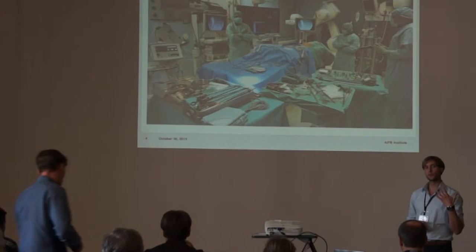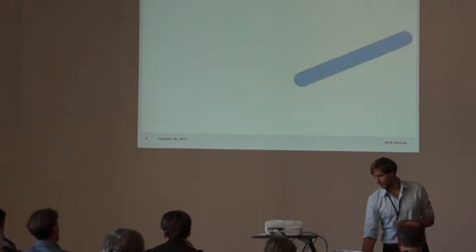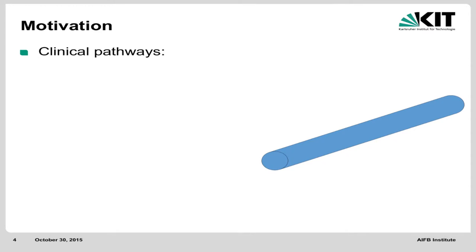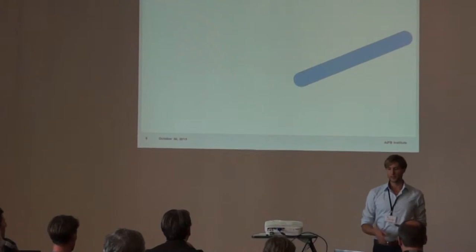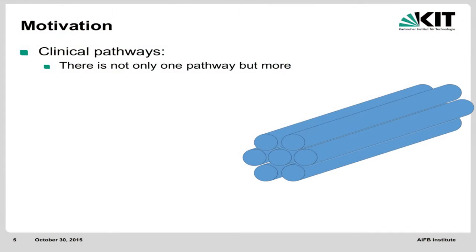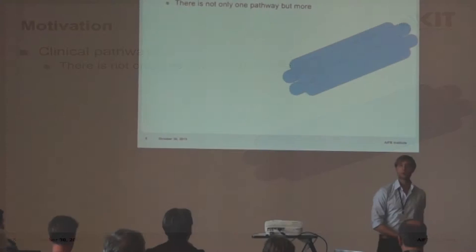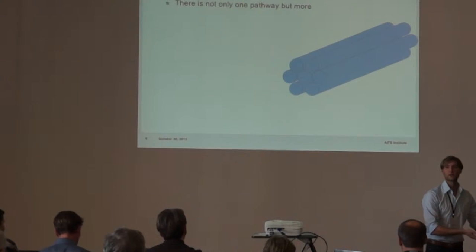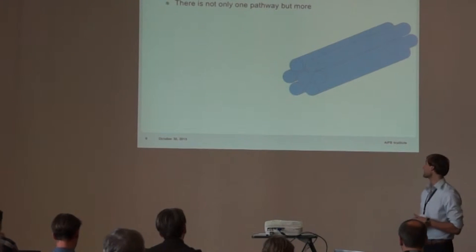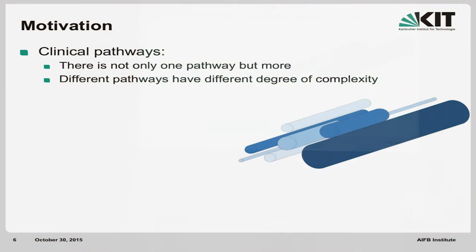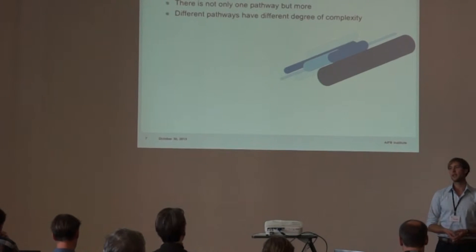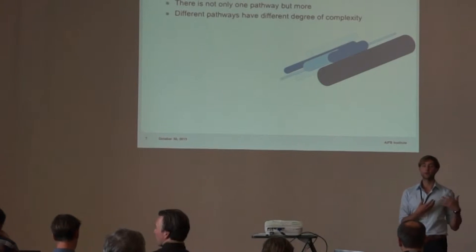However, the process becomes more complex although it helps them. Each bar represents one process, one clinical path. There is not only one clinical path — there are multiple clinical paths. We have one pathway for a patient who broke a leg, and one pathway for a patient who suffers from heart disease or a heart attack. Each pathway has a different level of complexity.